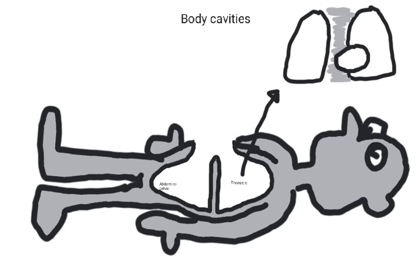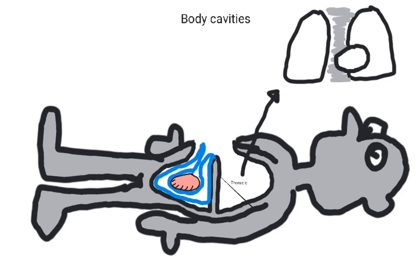Serous membranes can be found in all of the ventral body cavities. The parietal portion lines the body cavity, whereas the visceral portion touches the organs. The abdominal cavity is a little bit more complicated because here we call the serous membranes the peritoneum. In addition to the visceral and parietal peritoneum, there were also mesenteries, which didn't touch either the organs or the body cavity. Furthermore, some of these mesenteries got specific names like the greater omentum and lesser omentum.